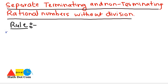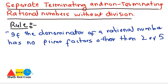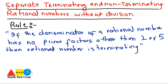According to the rule, if the denominator of a rational number has no prime factors other than 2 or 5, then the rational number is terminating. This is the rule to follow in order to identify which rational numbers are terminating and which are non-terminating without dividing them.